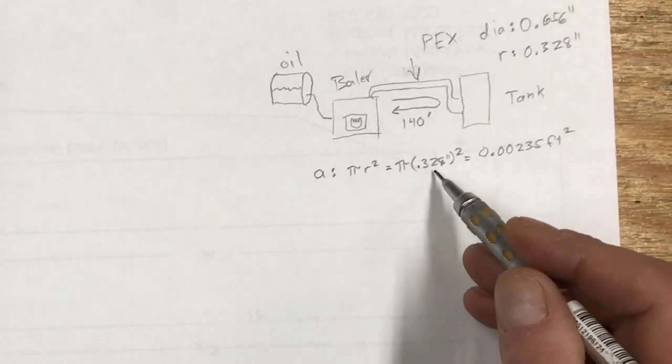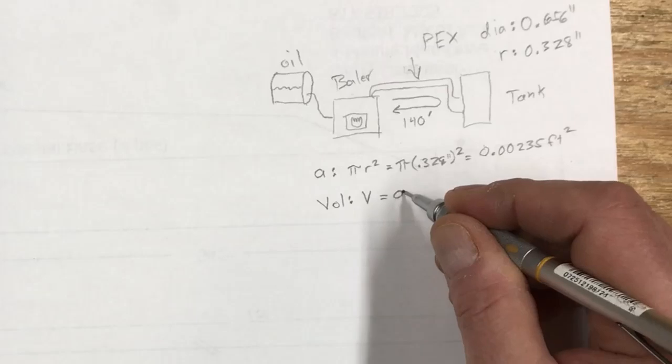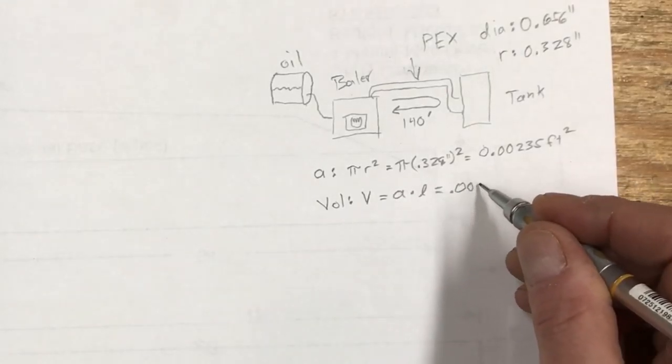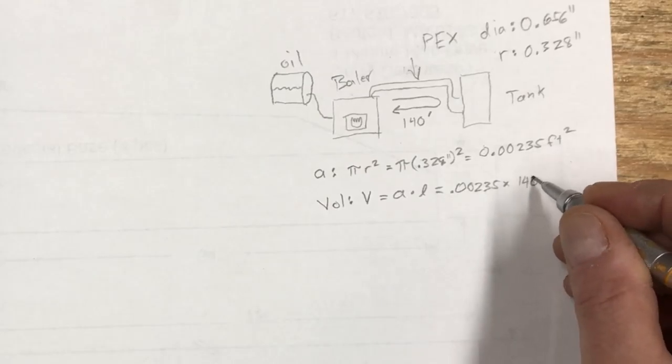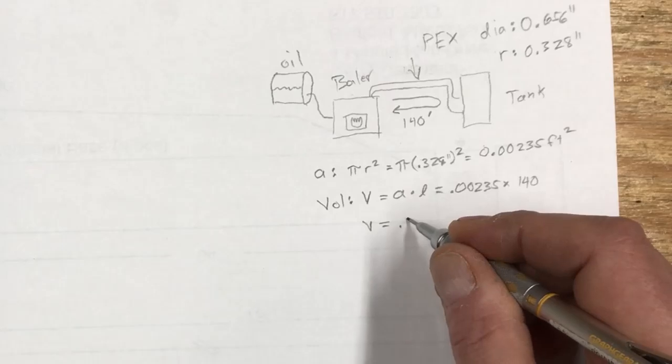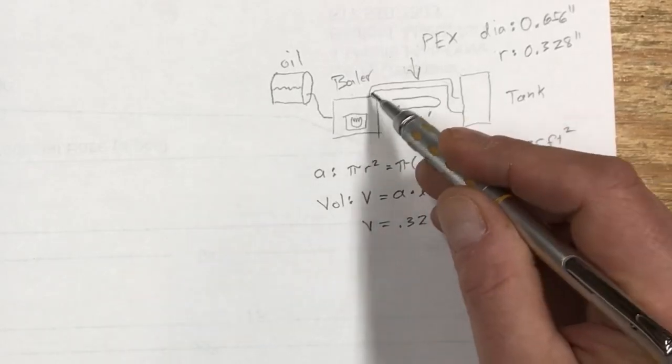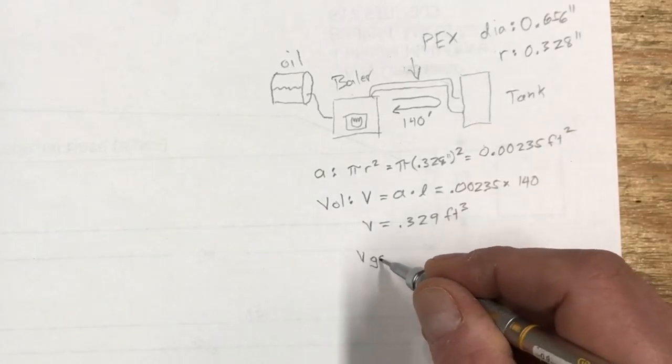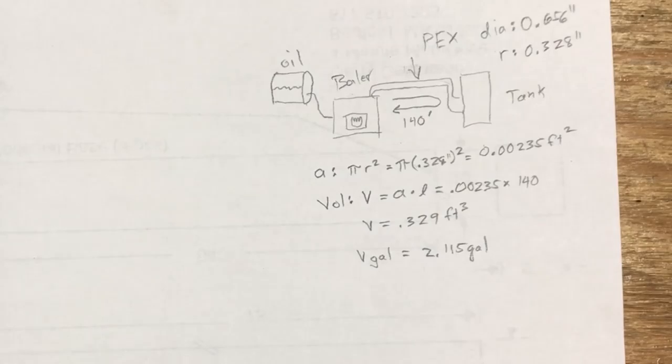So I translated from inches to feet in there too. So the volume or V is the area times the length, so this is this number here 0.00235 times 140 and this is all in feet. So the volume turns out to be 0.329 cubic feet. That's the volume of water that's stuck in the PEX tubes all the time because there's always water in it. The volume in gallons turns out to be 2.115 gallons and I leave it up to you to get the conversion from cubic feet to gallons.